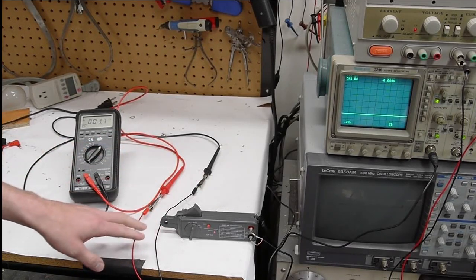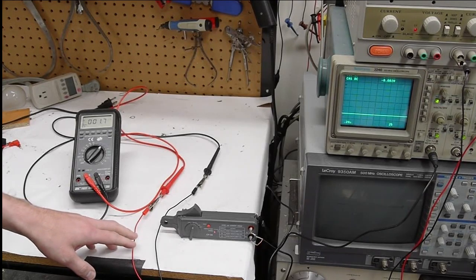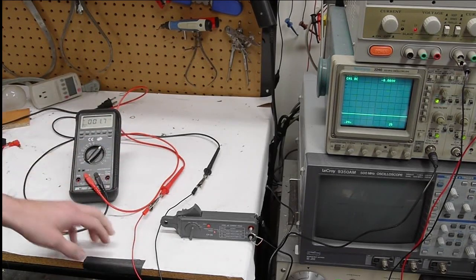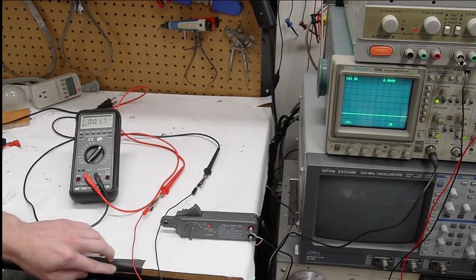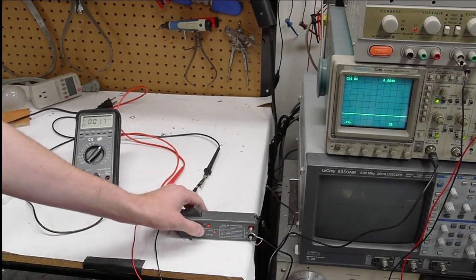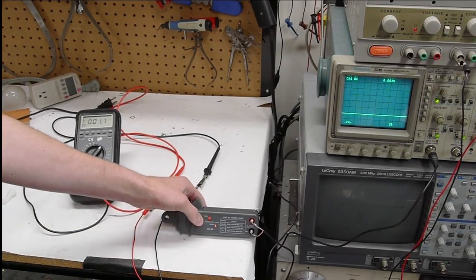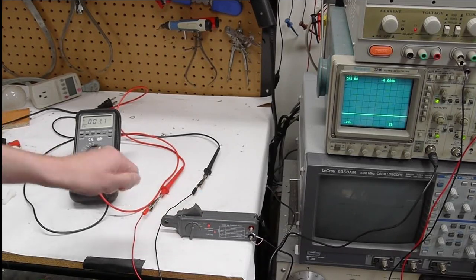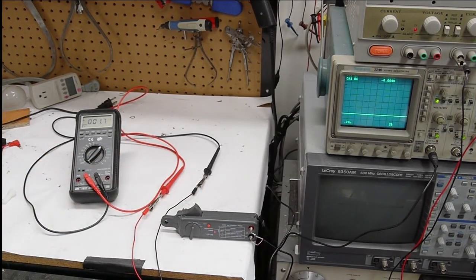So the problem with the Hall effect sensors is that they're sensitive to outside magnetic fields, even the Earth's magnetic field if you're measuring small currents. So the DC probes all have a zeroing button, or a zeroing dial, so that you can make sure to get a zero reading before actually measuring the current that you want to measure.